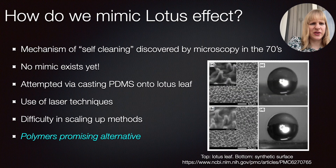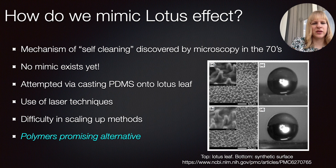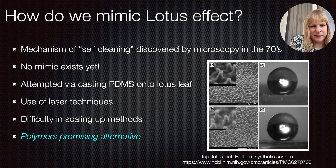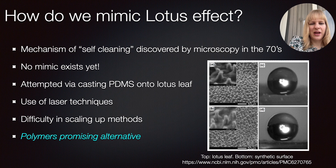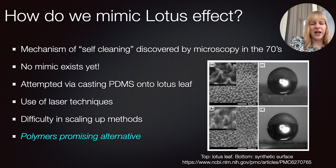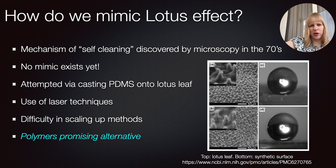It's been known for a long time that lotus leaves have this self-cleaning effect. However, it wasn't until more advanced microscopy techniques in the 1970s that we found out the mechanism behind it. We can now very nicely replicate the surface, as you can see in this image — on the top is the lotus leaf and on the bottom is a synthetic surface. You can cast a polymer on top of it and when you peel it off, you can mimic the ridge structure of the lotus leaf.